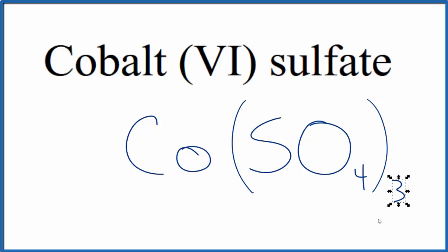We have three of these sulfate ions here. Each one's 2 minus. That's why the cobalt here, we have to write this six, this Roman numeral, to show that it's 6+. This is Dr. B, and thanks for watching.